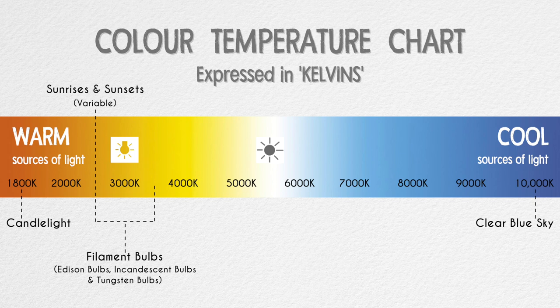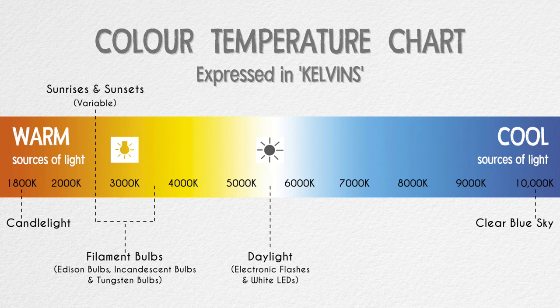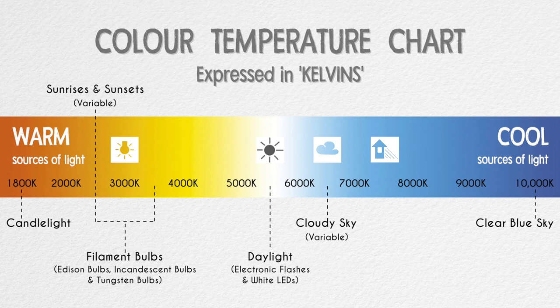Navigate towards the center and the sources of light become neutral. Daylight has a color temperature of approximately 5500 Kelvin — this overhead sun is basically white light. Electronic flashes and other LEDs fall within a similar range. Navigate further right and we enter cool sources of light. A cloudy sky has a color temperature of approximately 6500 Kelvin, and natural bounced light indoors or in the shade has a color temperature of approximately 7500 Kelvin.